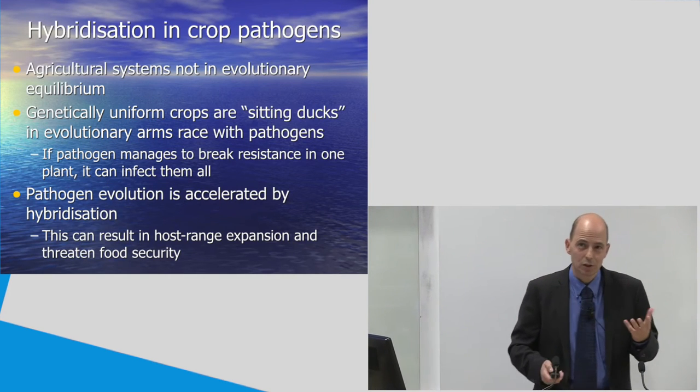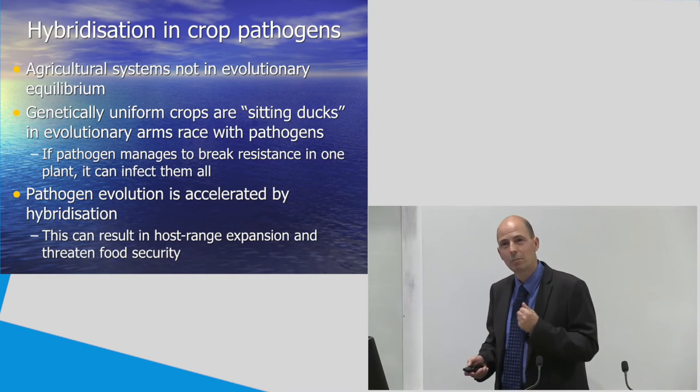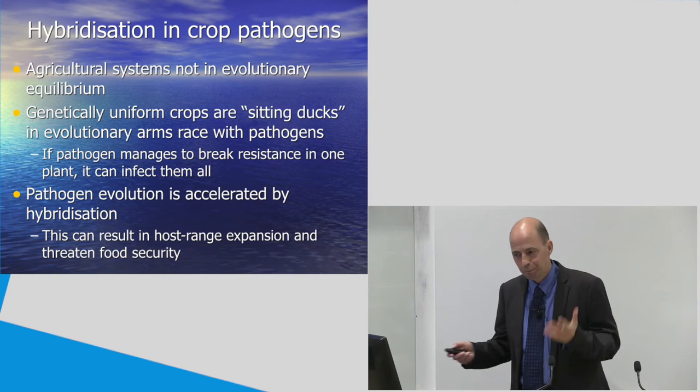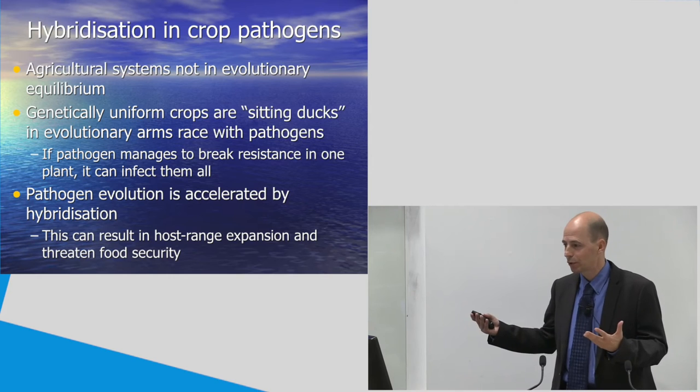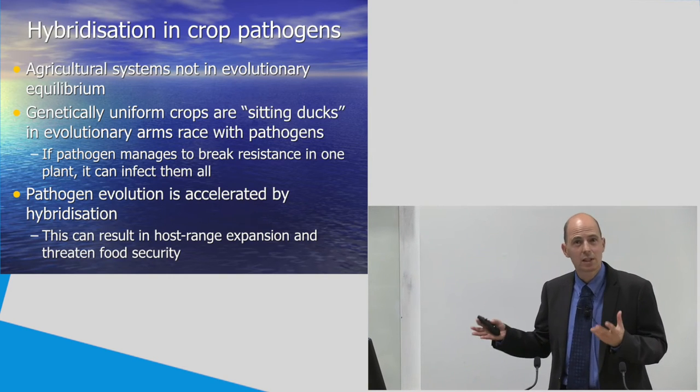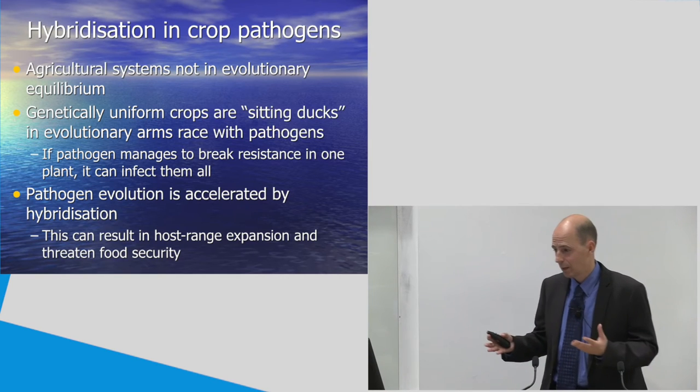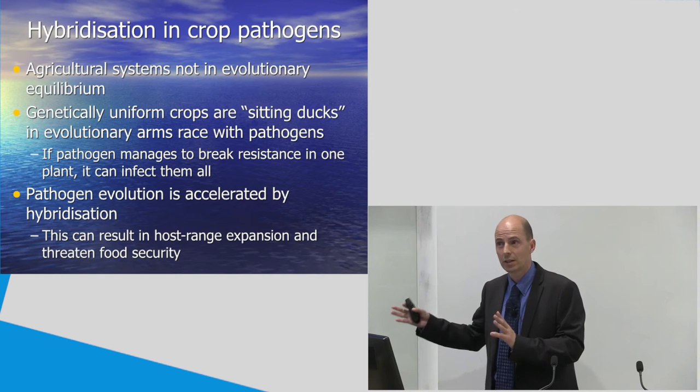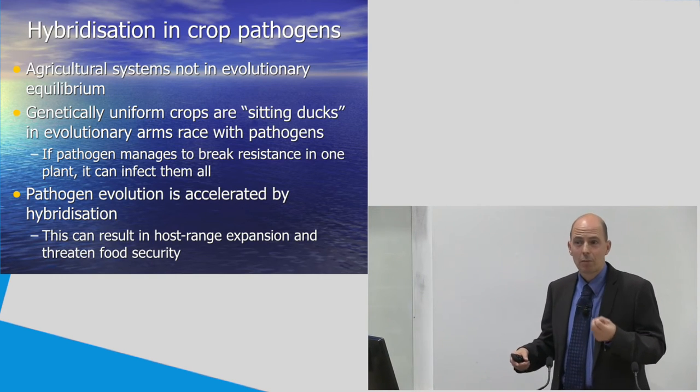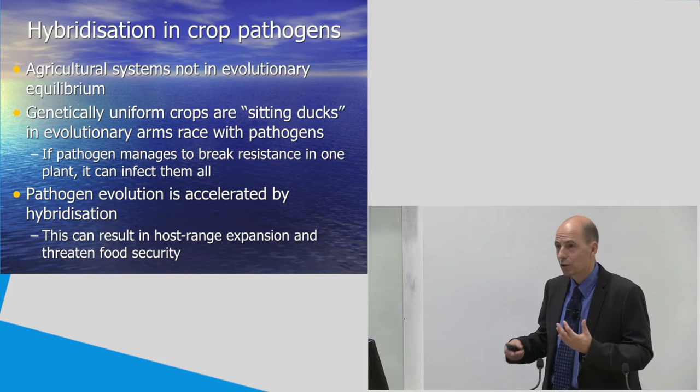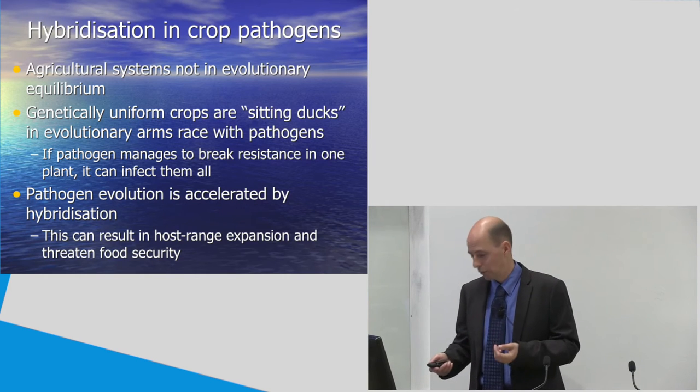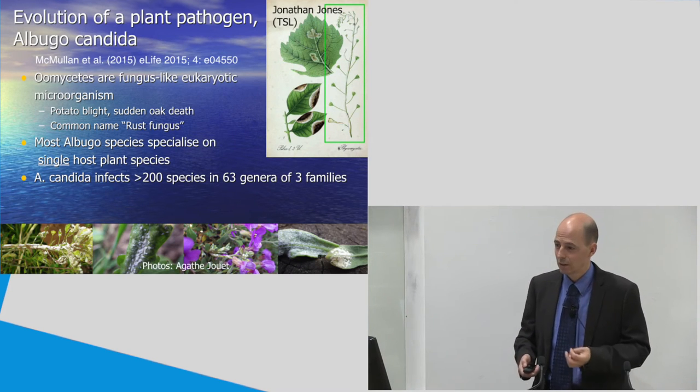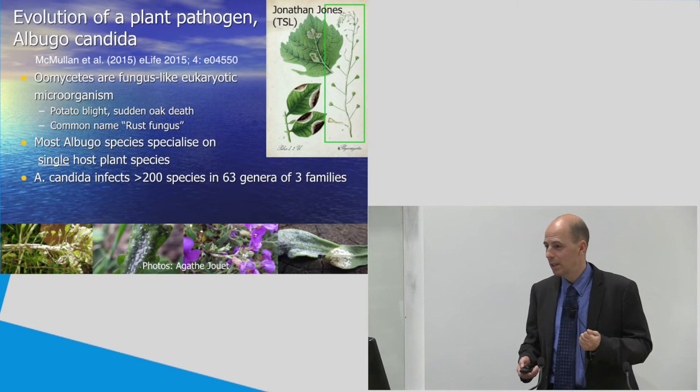Now, hybridization is not only happening in fish, it also happens in crops, crop pathogens. In particular, the pathogens are the subject of this part of the talk. Agriculture systems are not in evolutionary equilibrium. They tend to exist of genetically uniform crops, which are, in evolutionary terms, kind of sitting ducks in the evolutionary arms race with pathogens. If a pathogen can break the resistance of one host plant, it can break the resistance of them all, because they're all genetically identical. Now, similar to the fish, pathogen evolution is really accelerated by hybridization. So, this could result in host race expansion and potentially threaten food security.